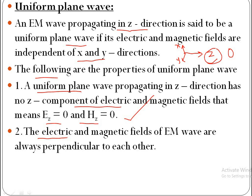That is the first property. Second property: electric and magnetic fields are perpendicular to each other. Electric and magnetic fields are perpendicular to each other — this is the second property.